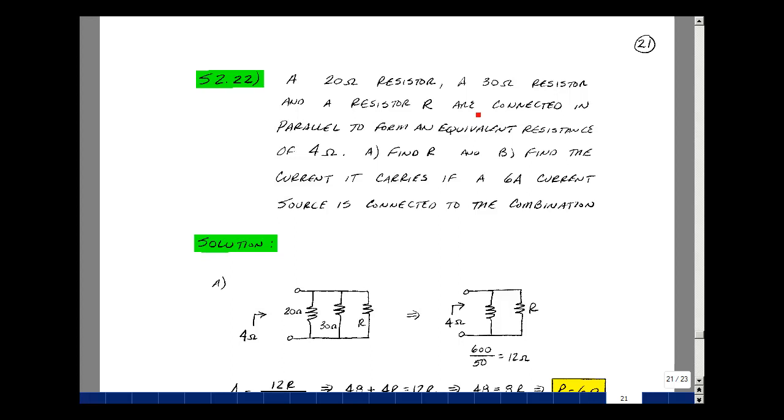Suppose that I have a 20 ohm resistor in parallel with a 30 ohm resistor and an unknown resistor R. I like that equivalent parallel combination to equal 4 ohms. Could you find the value of R and then how much current that this resistor would carry if I had a 6 amp current source connected to the parallel combination?